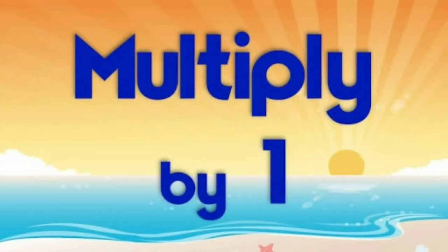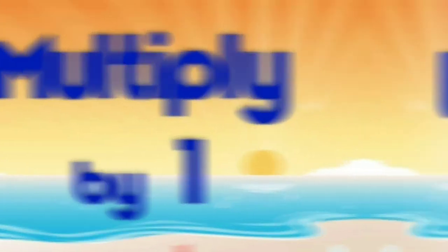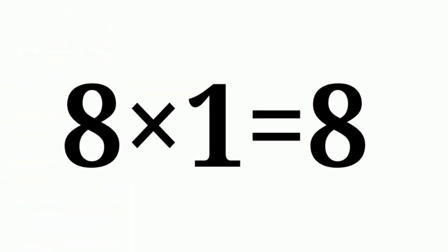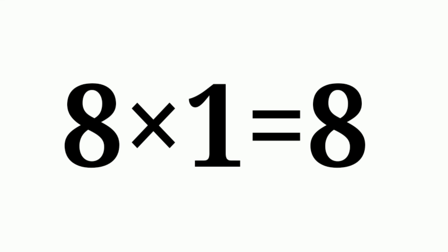Similarly, if we multiply 0 by 6, the answer will be 0. And if we multiply any number by 1, the answer is always the number itself. For example, 8 multiply 1 is equal to 8.